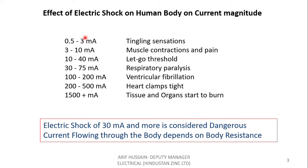Now let us see the effect of electric shock on the human body at different magnitudes of current. At 0.5 to 3 milliamperes, it will give just a tingling sensation and nothing else — perfectly fine. At 3 to 10 milliamperes, our muscles will start contracting and we will feel pain. At 10 to 40 milliamperes, it is called the let-go threshold, which means the victim who got a shock of around 40 milliamperes won't be able to rescue himself.